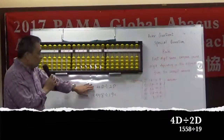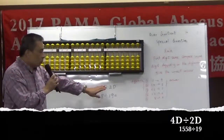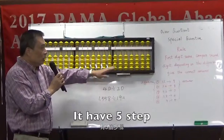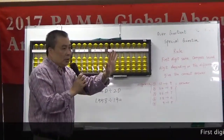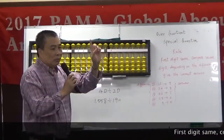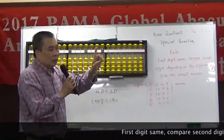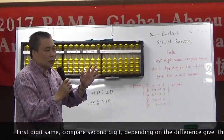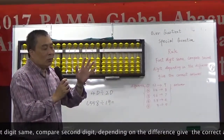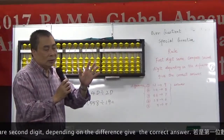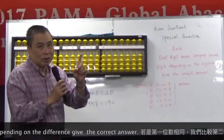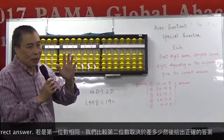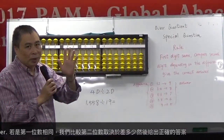We learn 4DG divided by 2DG. Sometimes 4DG divided by 2DG, we have 5 steps. The first is regular cushion — we don't need to retain. The second is over cushion, we want to have 2 times. The third is over cushion, 2 times up to 10.